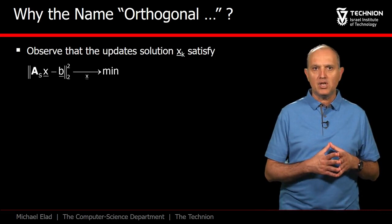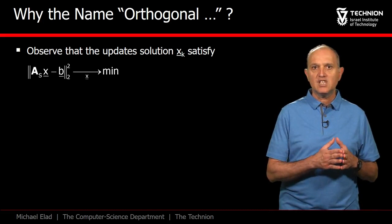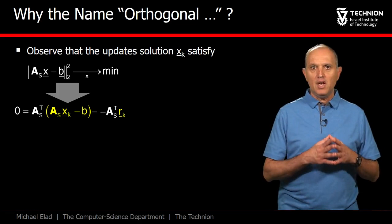Why orthogonal? Well, in the least squares we have just discussed, the optimal solution can be found by the derivative of the L2 error with respect to x. This leads to this expression, As transpose multiplying this yellow term.